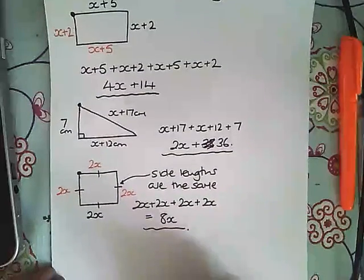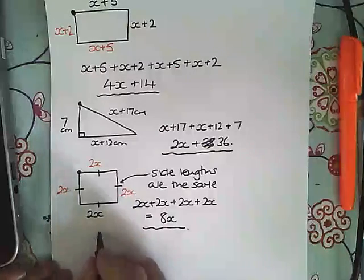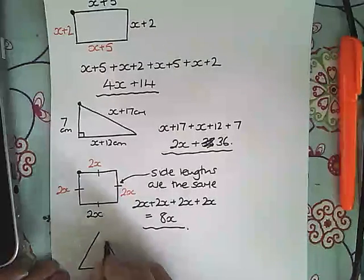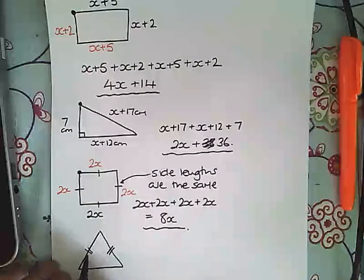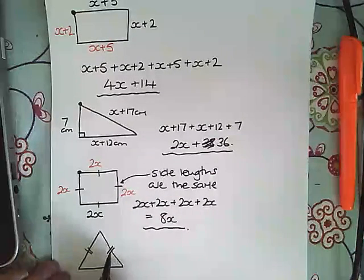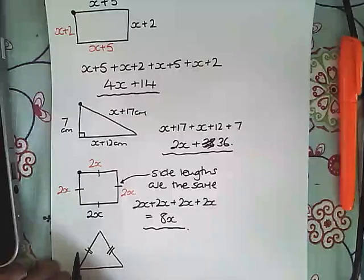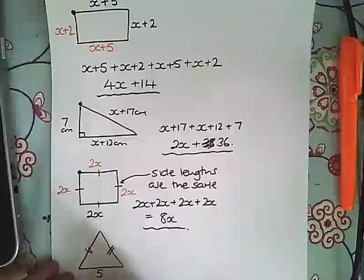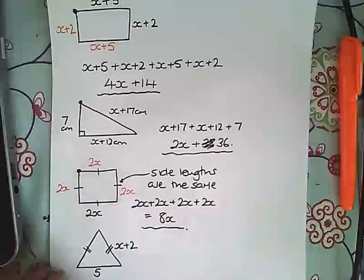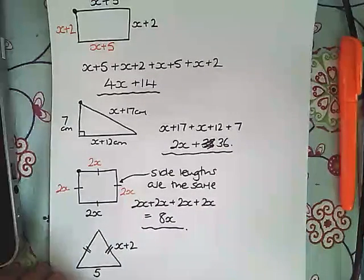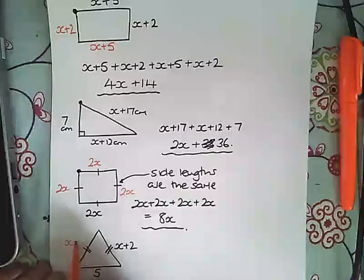Finally those side lengths being the same might come up in something like an isosceles triangle. So if we have a triangle that looks like this and this is marked with two dashes and this is marked with two dashes, that means this side is the same as this side. So we might be told that that's 5 and this is x plus 2. We could then fill in our missing length here as being x plus 2.